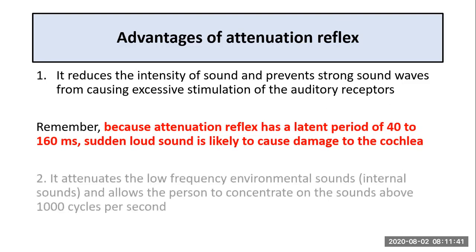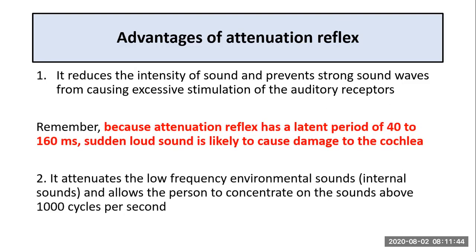The second advantage of the attenuation reflex is that it attenuates low-frequency environmental sounds and allows the person to concentrate on high-frequency sounds, that is sounds above 1000 cycles per second. Most internal body sounds have low frequencies, so attenuation of these internal sounds reduces their masking effect and improves the sensitivity of the ear to external sounds, allowing the person to concentrate on high-frequency sounds above 1000 cycles per second.